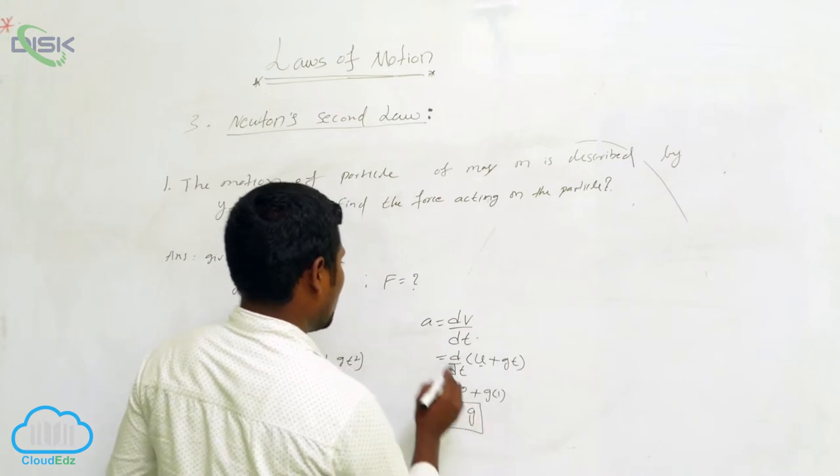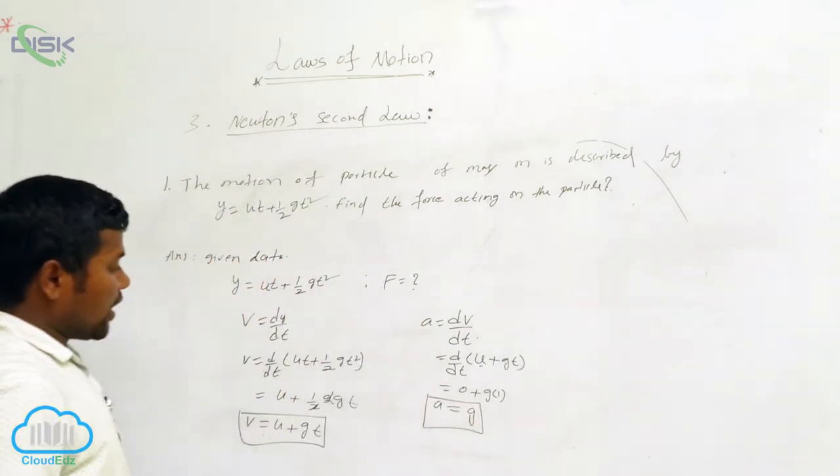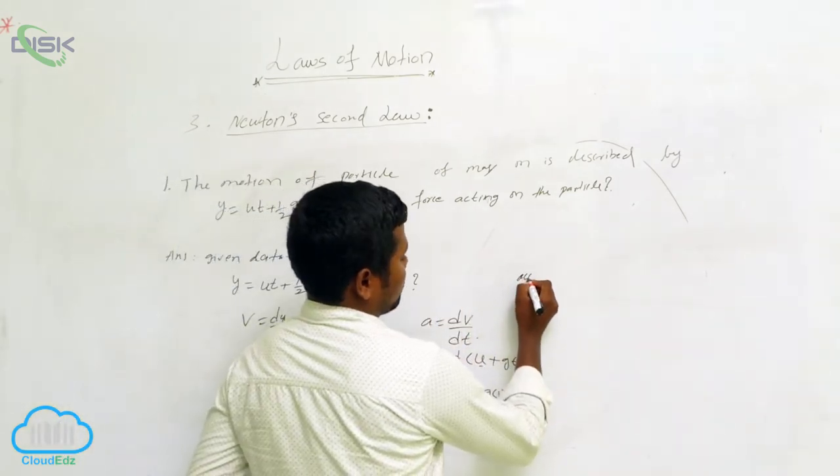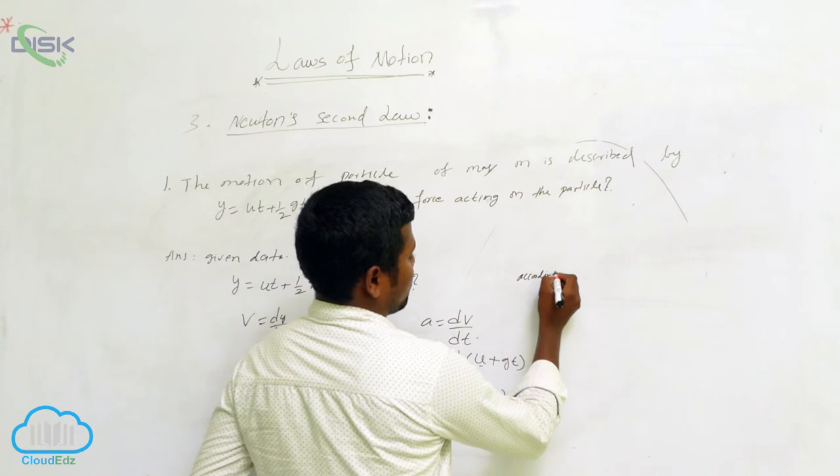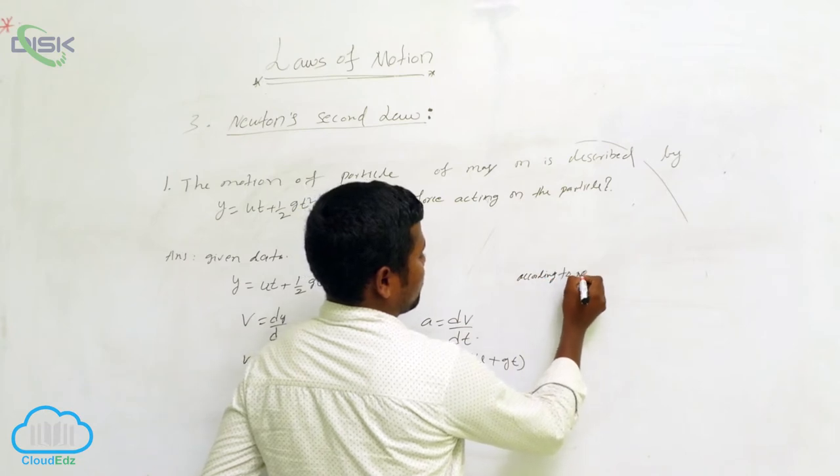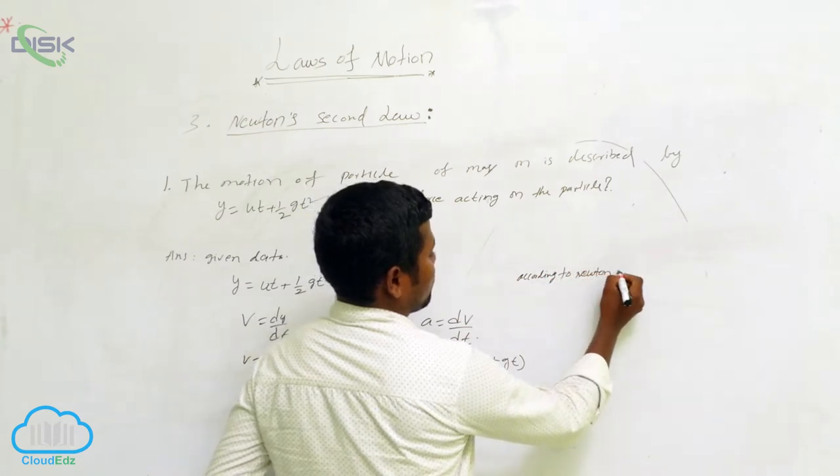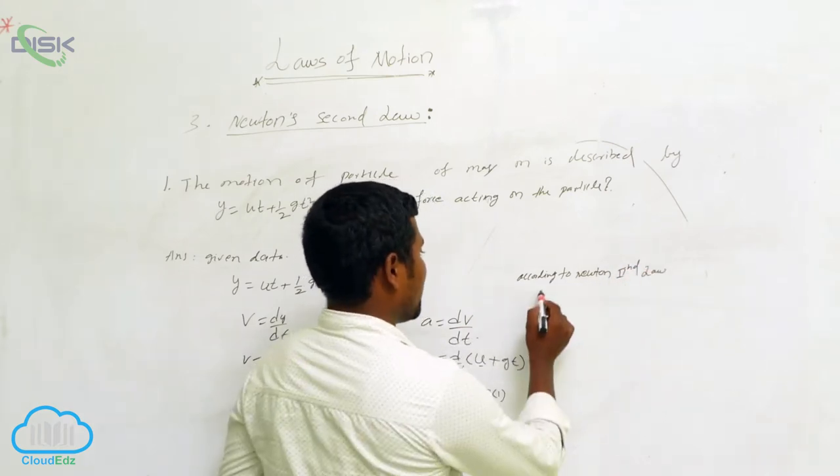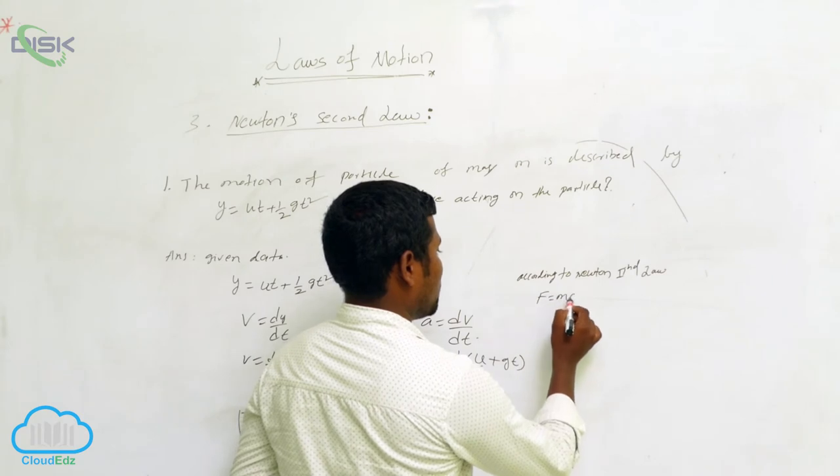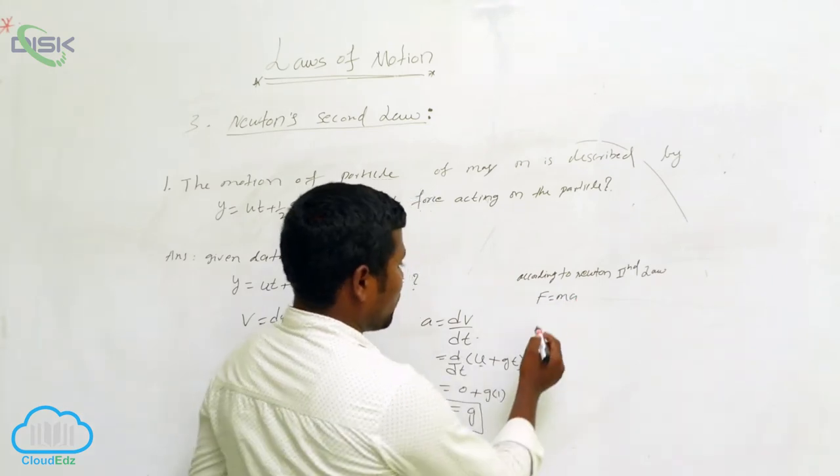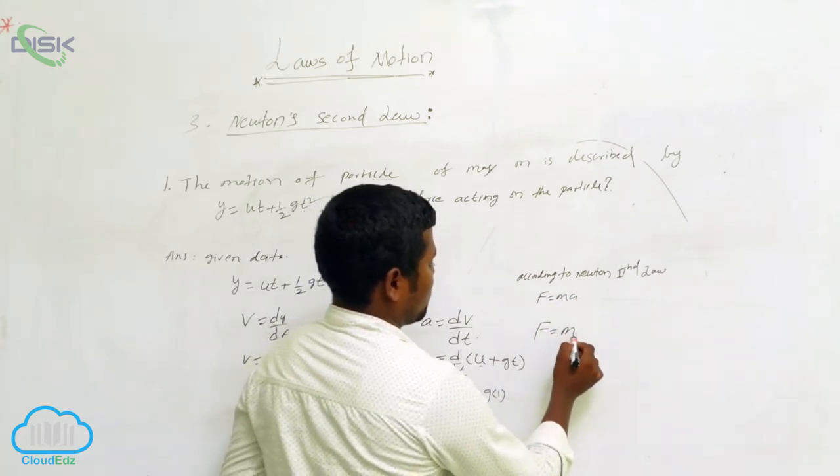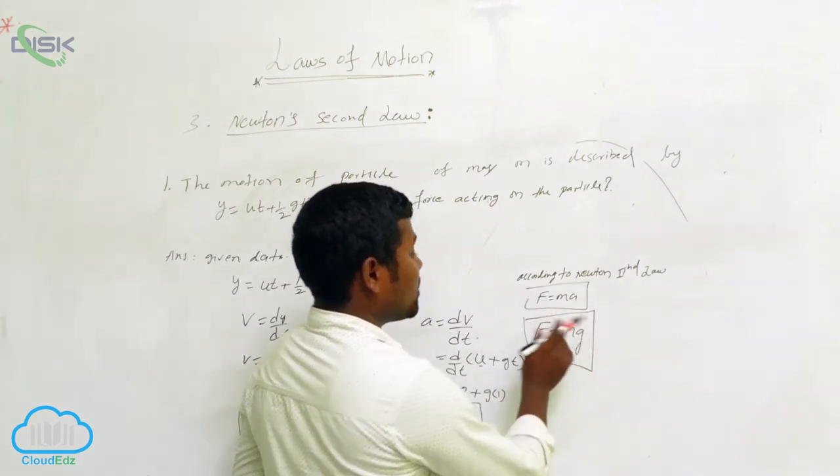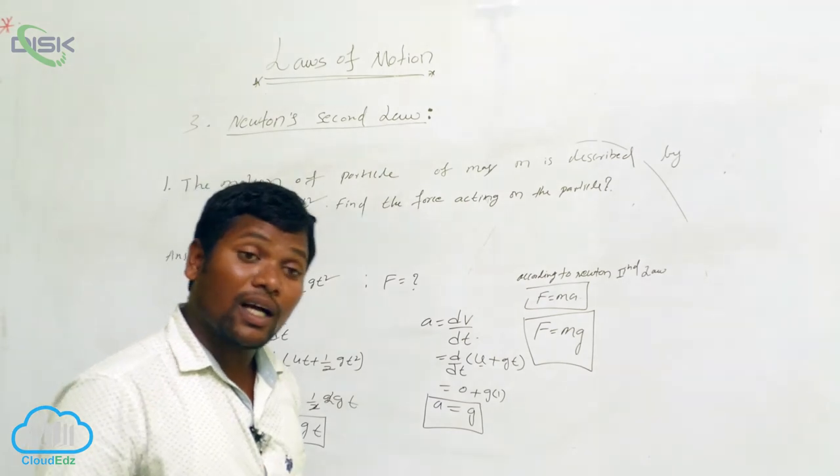Already, according to Newton's second law, what we can write? F equals ma. But a equals how much we got? This mg. So this is F equals mg.